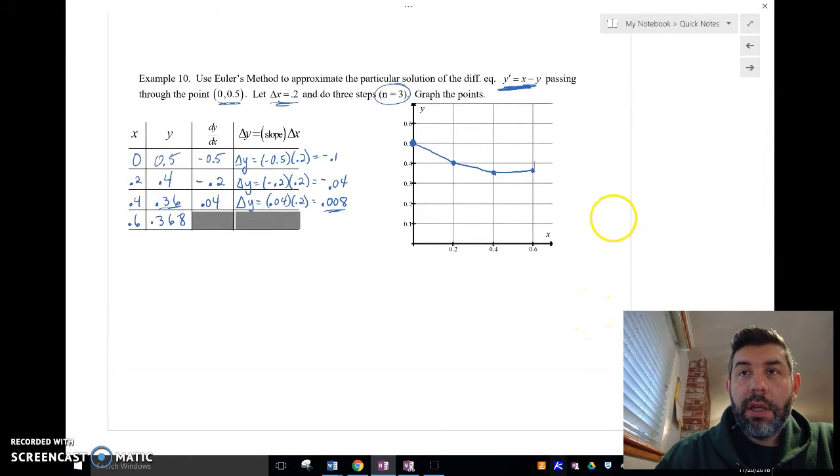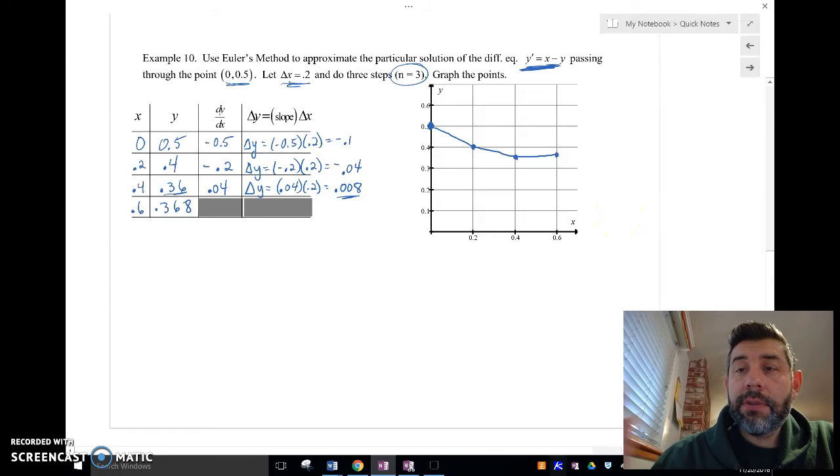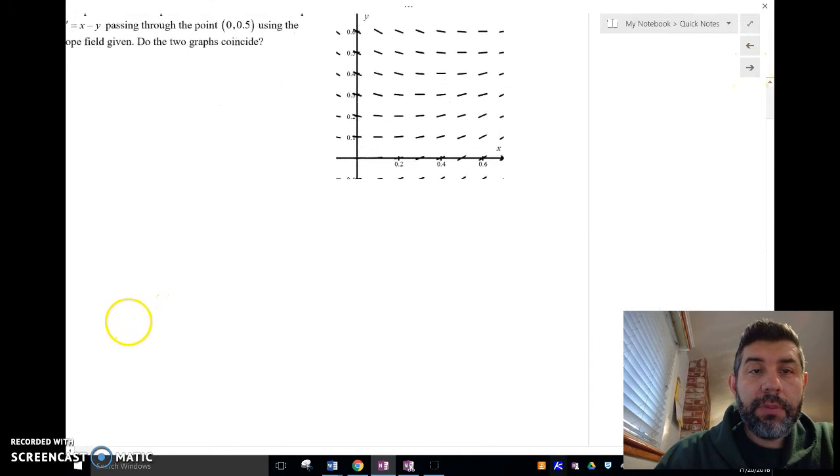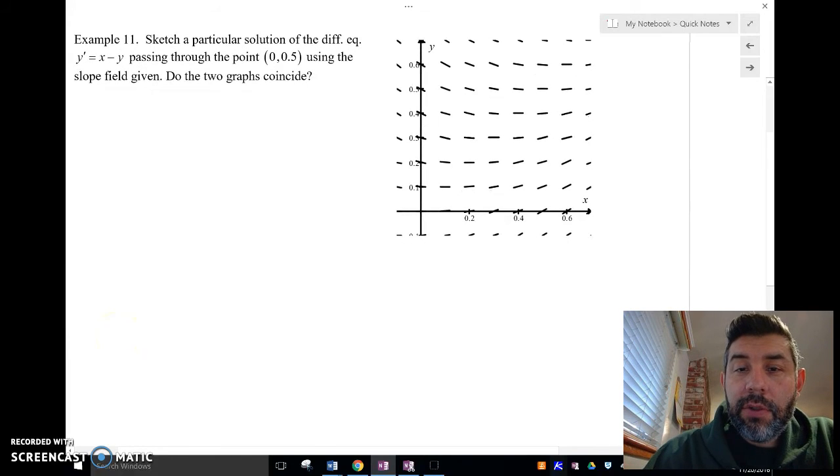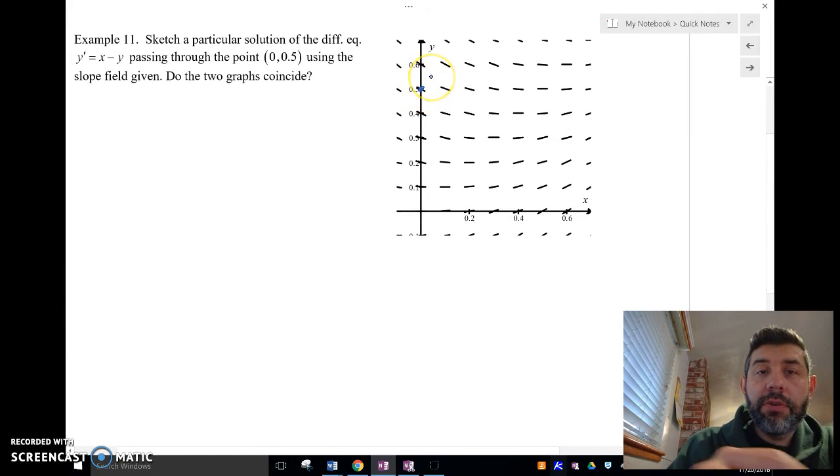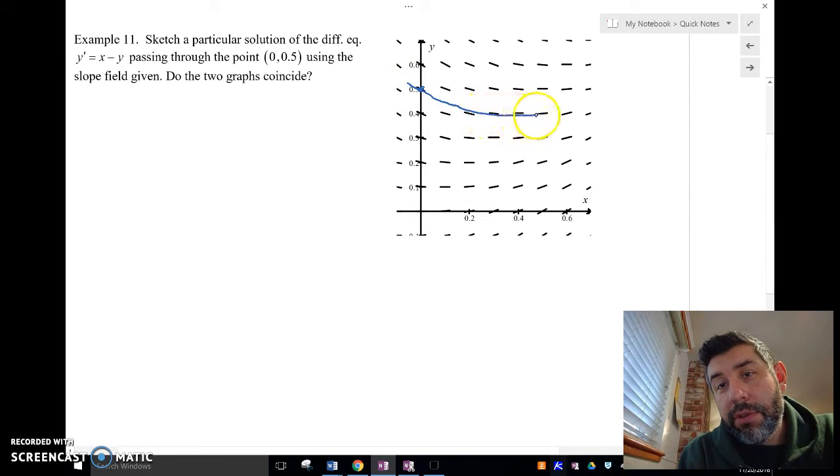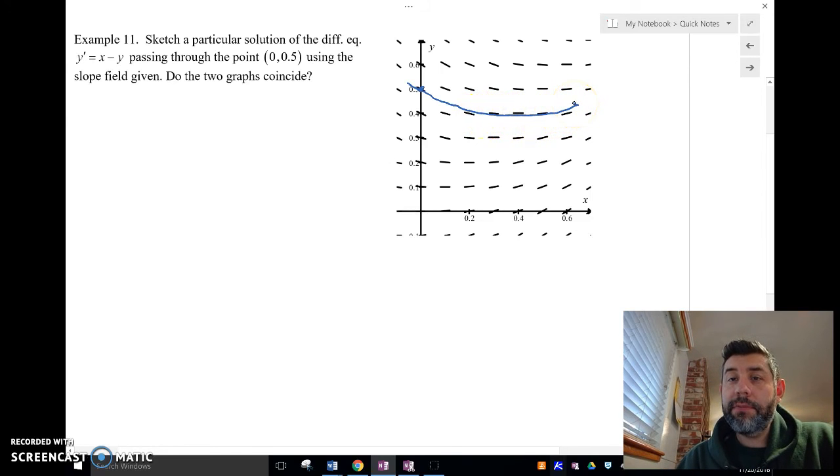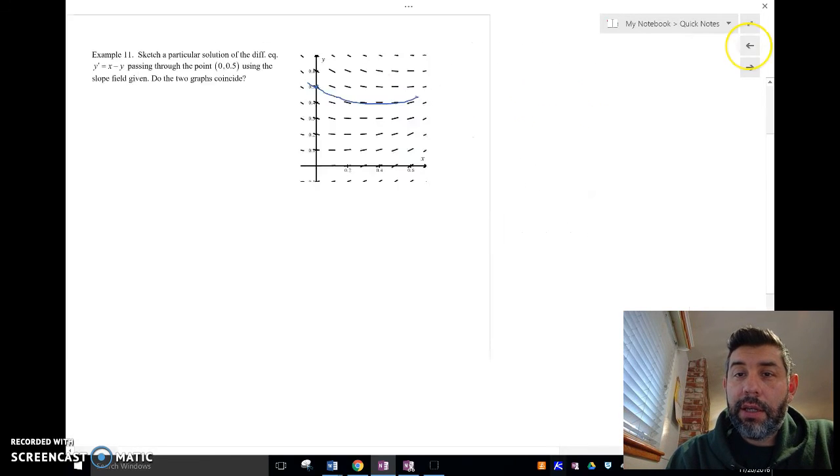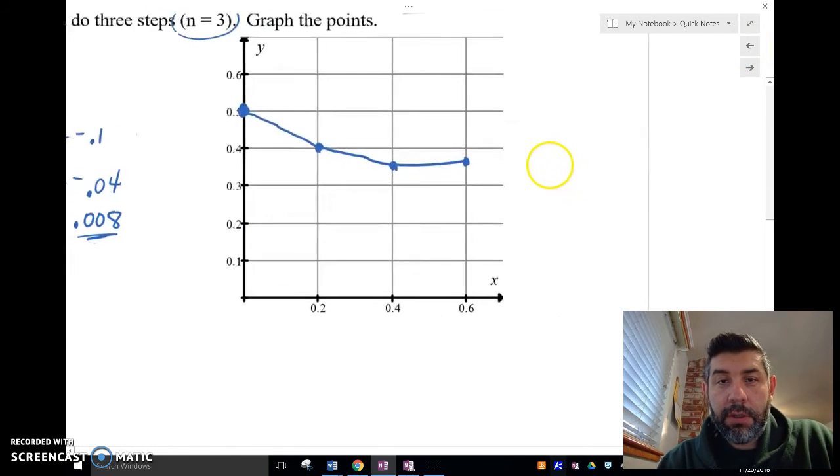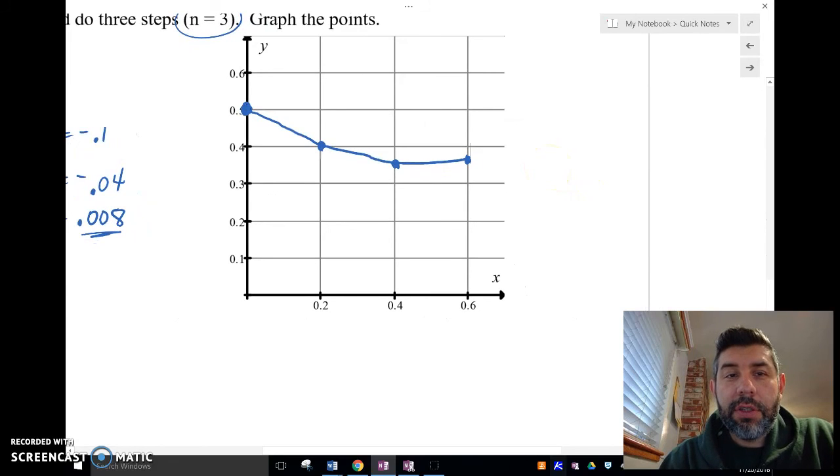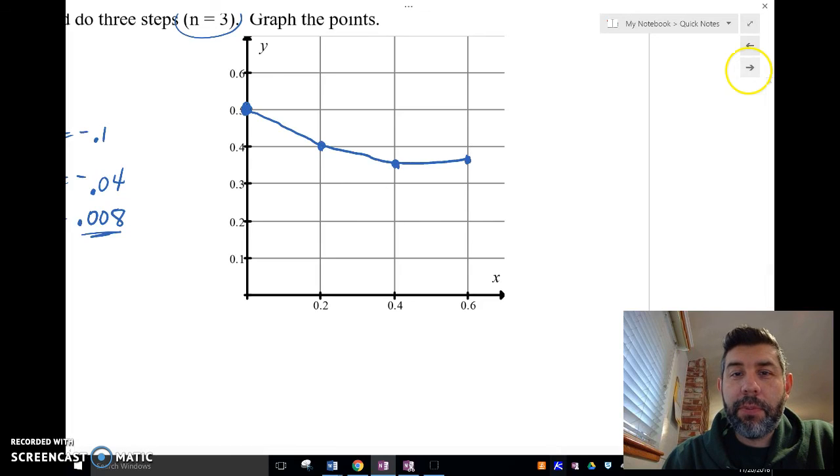So let's go ahead and sketch this particular solution on a slope field. So I've got my slope field here. We're going to go ahead and sketch that. So at 0 and 0.5, we're right here. Now, I just drew you the slope field of x minus y. So we're going to follow this guy along here. Remember, they have to be parallel to the slopes. Looks like it goes like that. So now, here's a question. Does this one look like that one? Well, it does. It's pretty close.